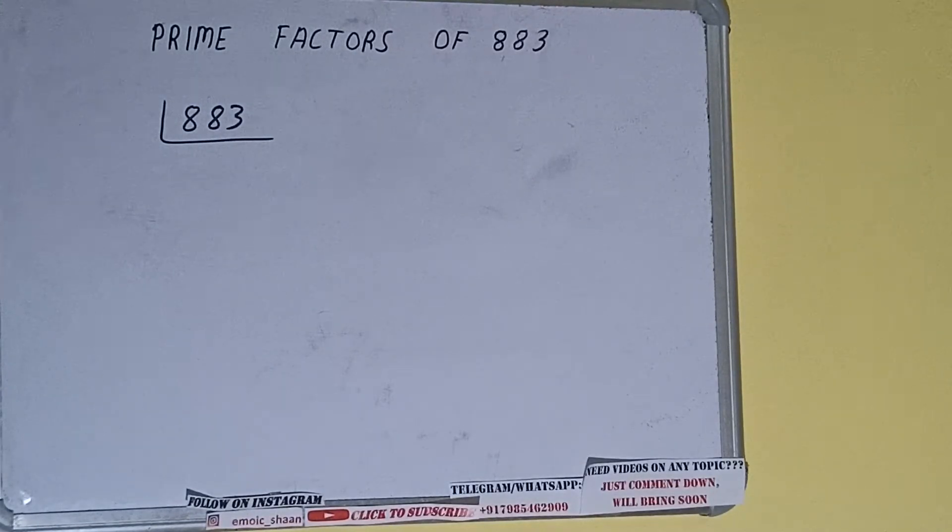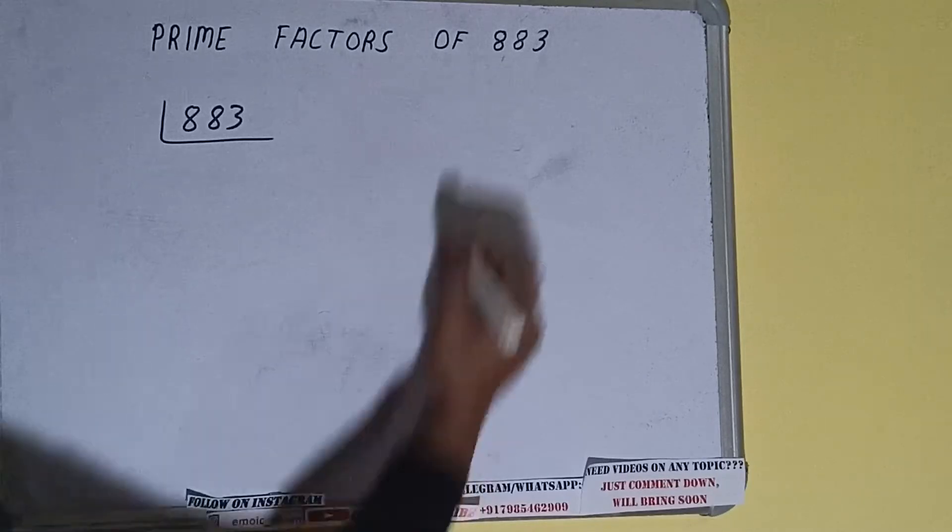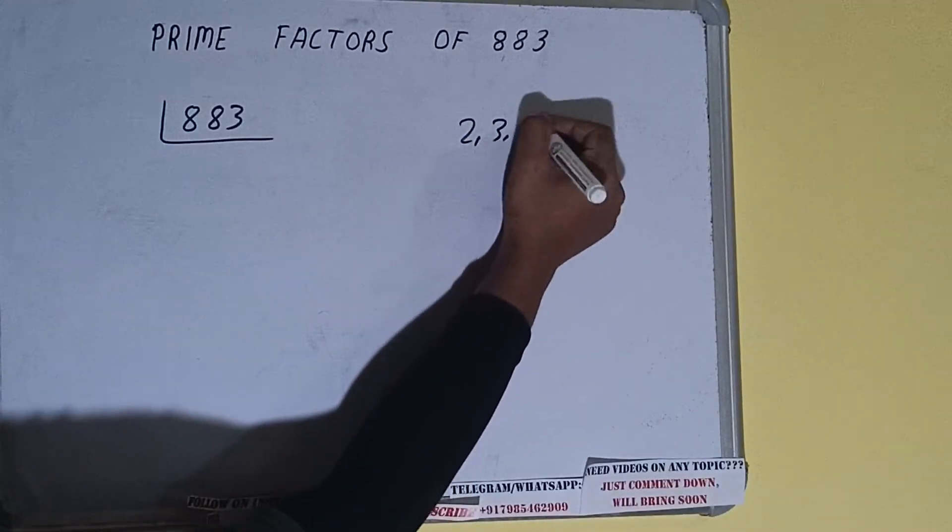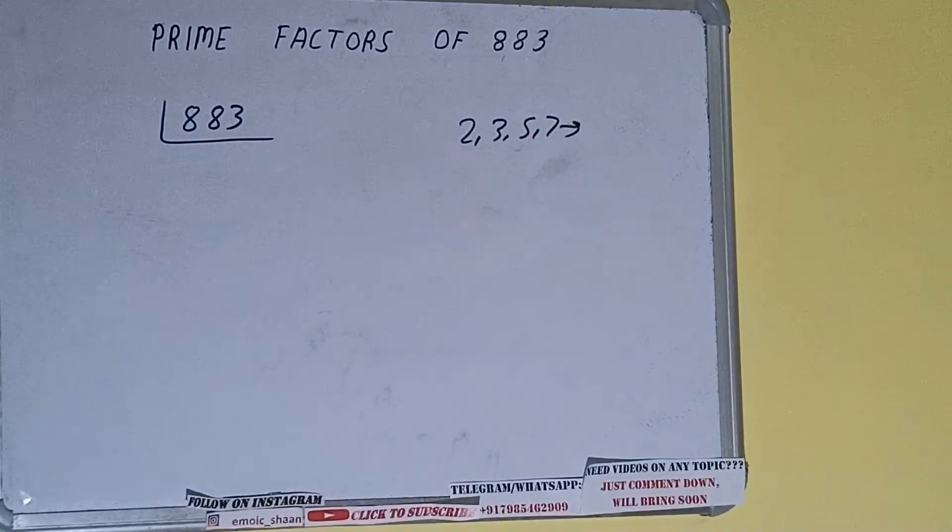So prime numbers are numbers that are divisible by 1 and the number itself, like 2, 3, 5, 7, and so on. Alright.